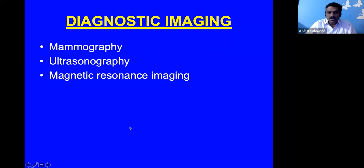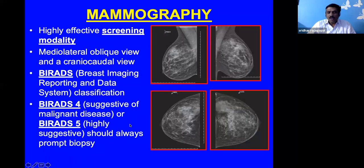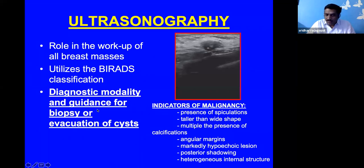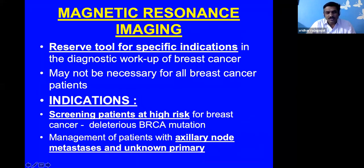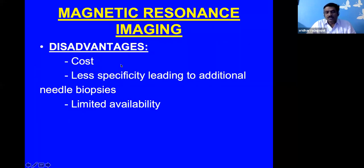Diagnostic imaging includes standard mammography, ultrasound, and MRI. Mammography is a highly effective screening modality with two views: mediolateral and craniocaudal. The BIRADS scoring system is standard; scores 4 and 5 indicate malignancy and require intervention. Ultrasonography can guide biopsy or evacuate small cysts. MRI is not routinely used — it is reserved for screening high-risk patients with suspected deleterious BRCA mutations or when there is axillary node metastasis with unknown primary. MRI has prohibitive cost, lower specificity, and limited availability.